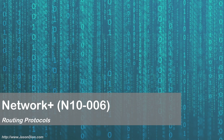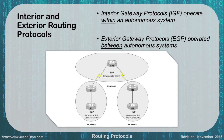Routing protocols. We have many different routing protocols that we use to dynamically create routes in our routing tables. We have interior protocols and exterior protocols. Interior gateway protocols operate within an autonomous system, inside your networks that you own. When you start dealing with exterior gateway protocols, you're dealing with things operated between autonomous systems.